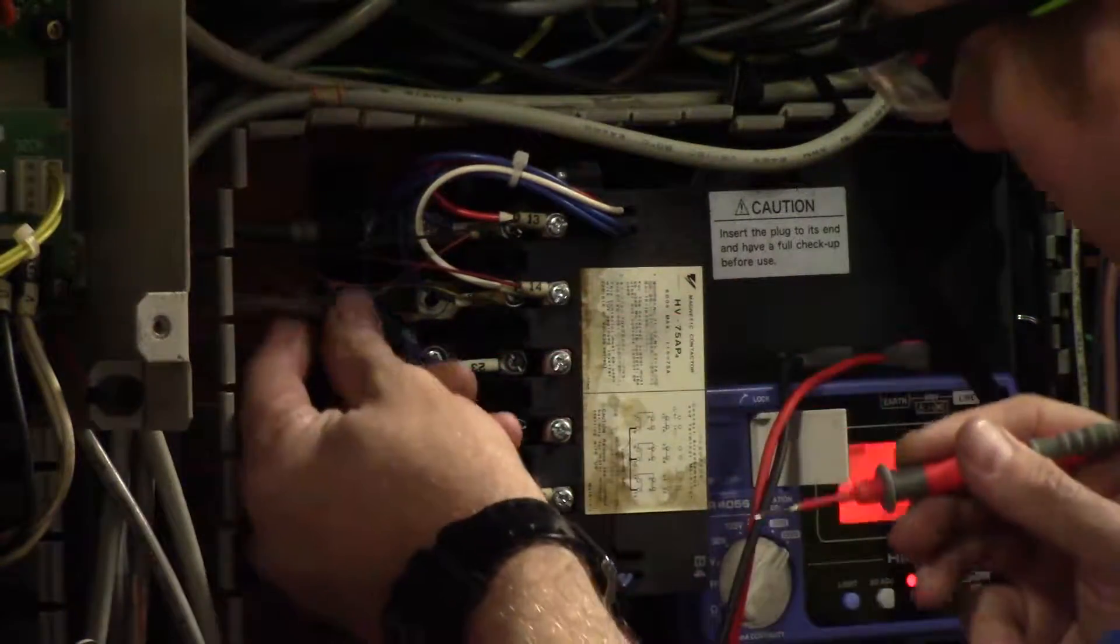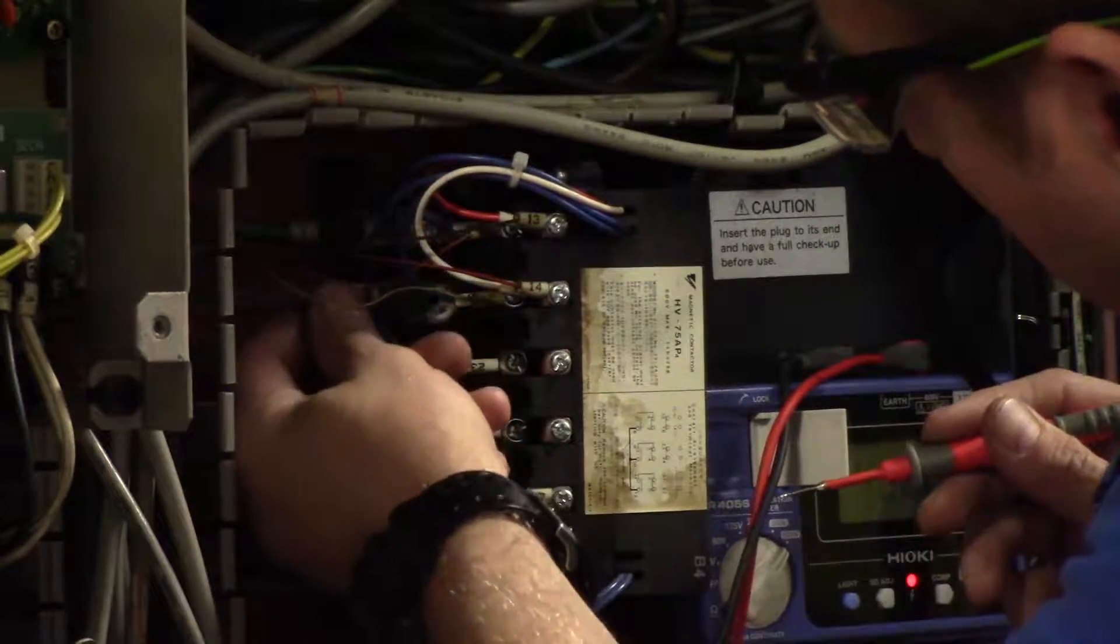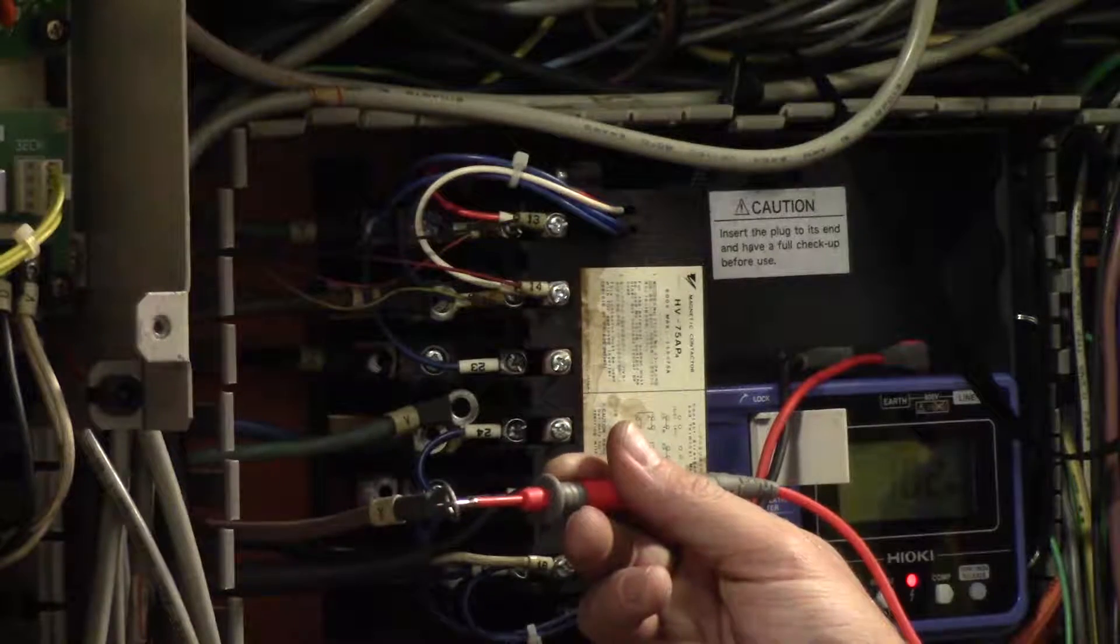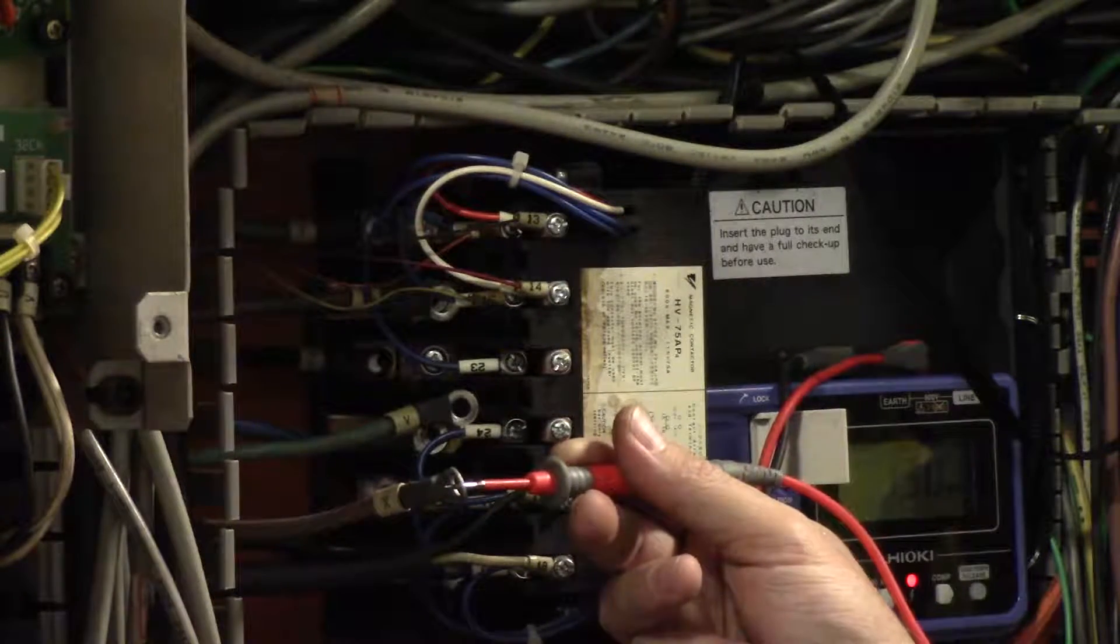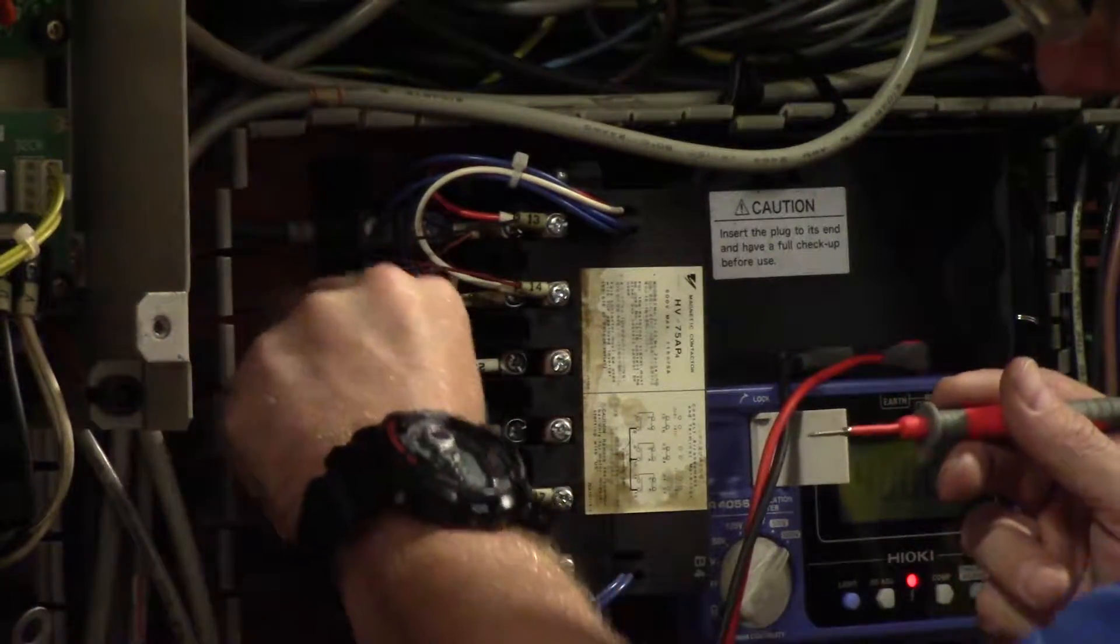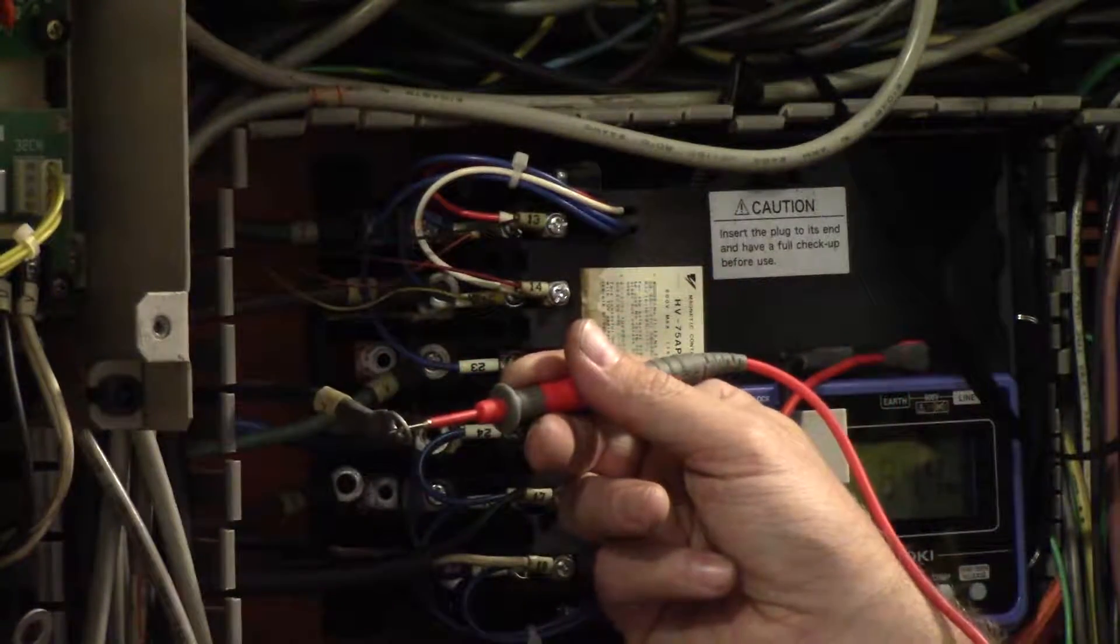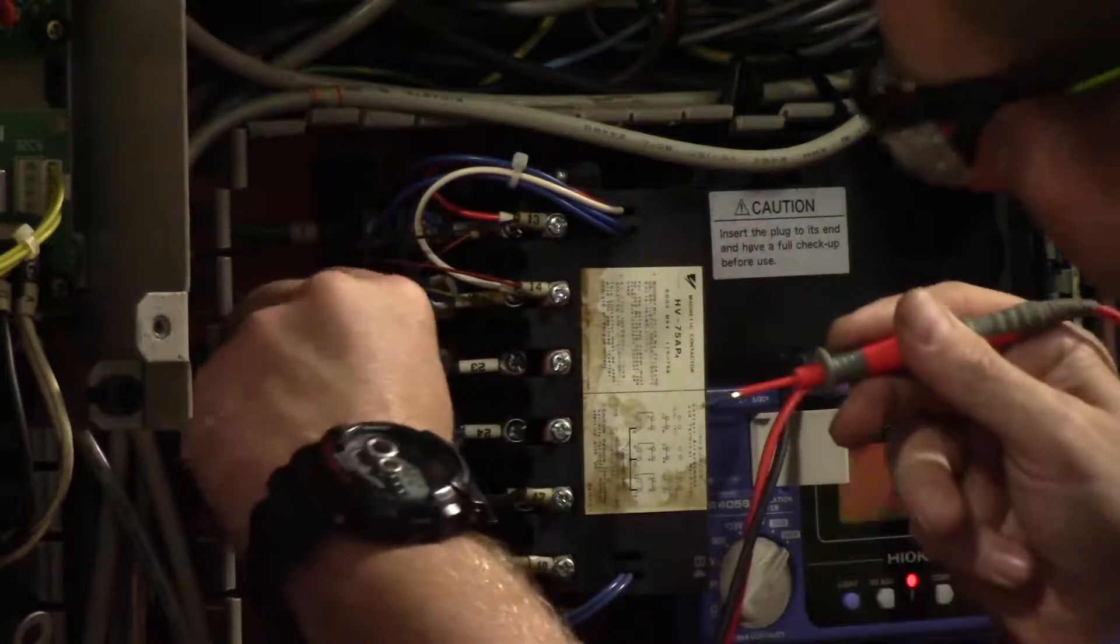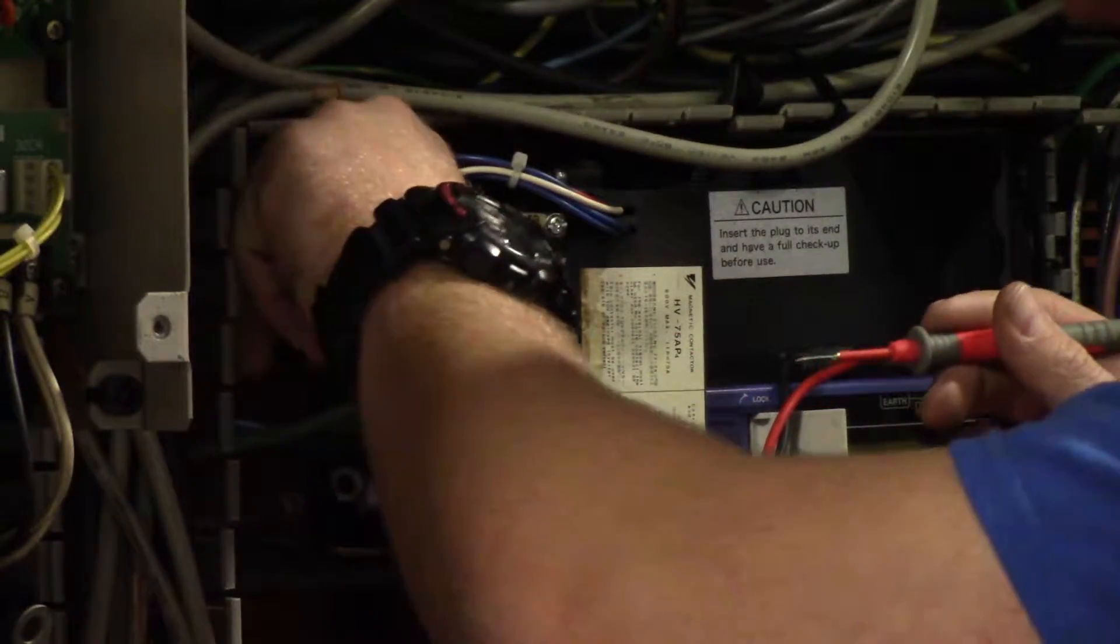U is grounded, so we can go ahead and check X. Yep, X is grounded. Z is grounded, and let's check Y.